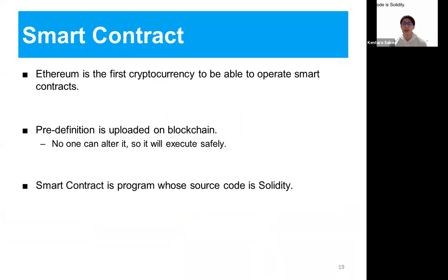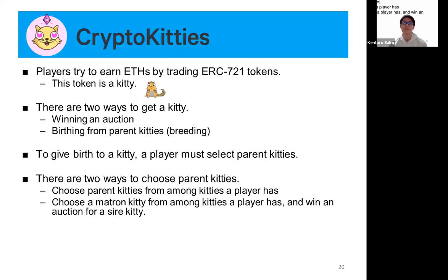Ethereum is the first cryptocurrency able to operate smart contracts. By uploading pre-definition on blockchain, its immutability is guaranteed. Smart contracts are coded in Solidity. In CryptoKitties, players try to earn ethers by trading ERC-721 tokens. In this game, a token is treated as a kitty. By trading kitties, a player aims to make money.